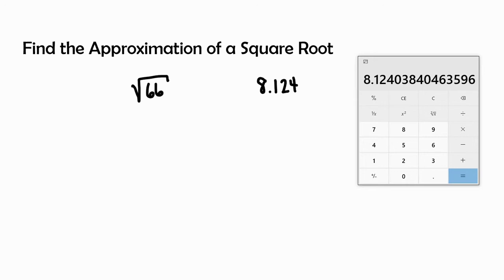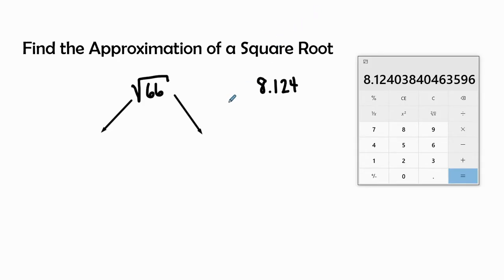As we've gone through in previous videos, I've shown where radical 66 falls into place. I'm going to ask myself what two perfect squares the square root of 66 falls in between — what two perfect square roots are going to be greater and lesser.